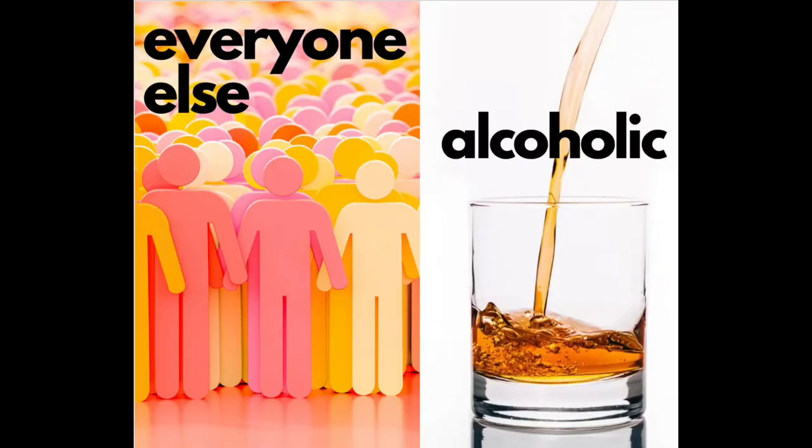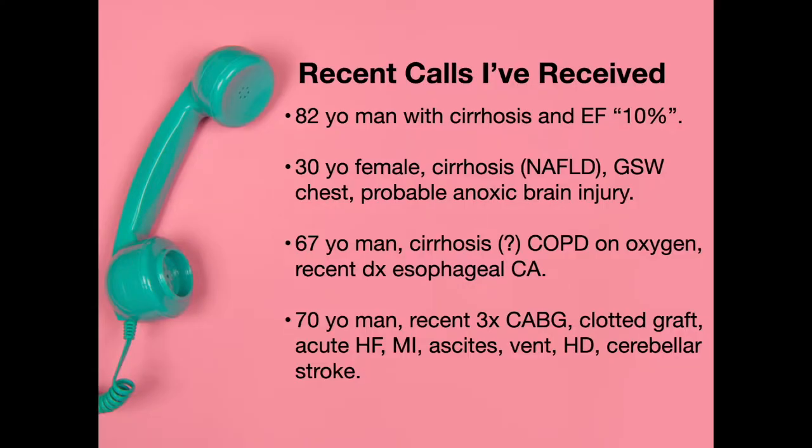When we evaluate patients for transplant, it seems as if there's everybody else — those with viral hepatitis, autoimmune disease, fatty liver — and then there is the alcoholic. We do look at these patients a little more differently, a little more critically. I wanted to share a few recent phone calls into my office from physicians wanting to refer patients for transplant. The calls have been mind-boggling. For instance, an 82-year-old man with cirrhosis and an ejection fraction of 10 — clearly not a transplant candidate, but they wanted to make sure they weren't missing any opportunity.